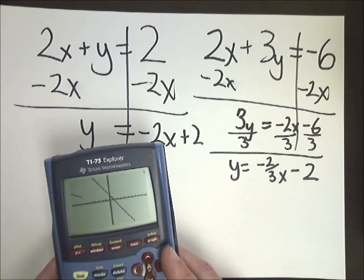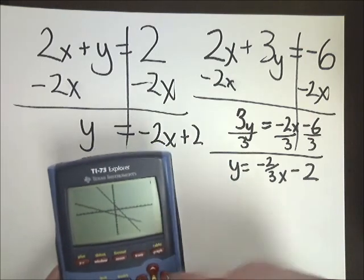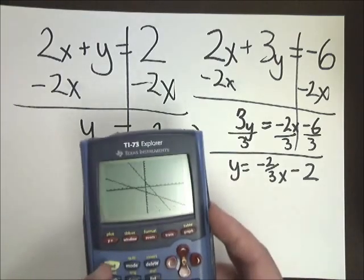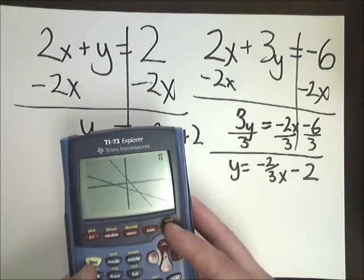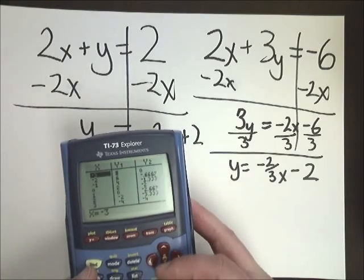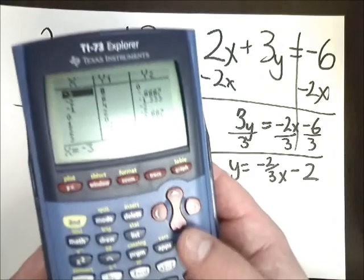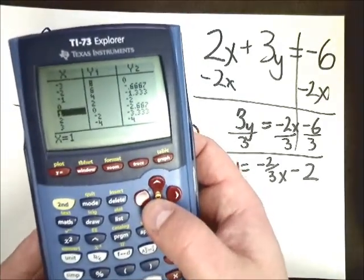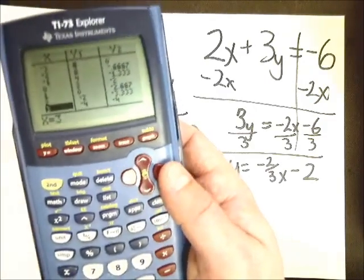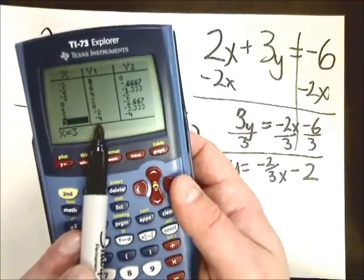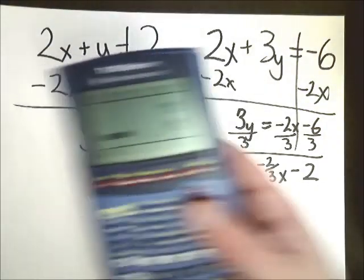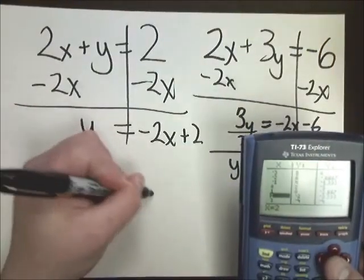And I'm going to look to see where they intersect. And they intersect right here, which is in the positive X's, which will help me when I look at the table. So to get to table, you hit second and then graph, which is the table setting. And you go here. And I'm going to start looking at X's that are in the positive section. So I'm going to click down a little bit. And if you look at number 3 or if X is equal to 3, it has a negative 4 for the first group and a negative 4 for the second one, which means that my answer choice is 3, negative 4.